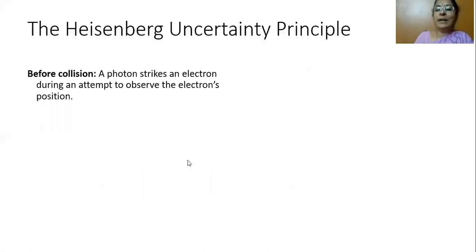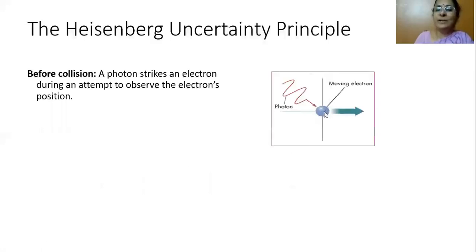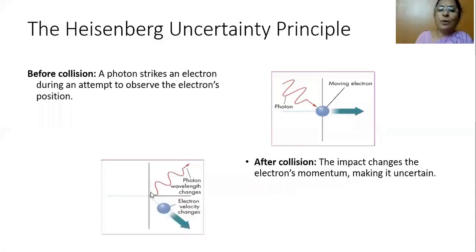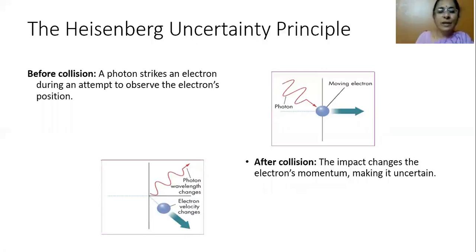To picture this situation: a photon is striking an electron that is initially at rest. Before the collision, the electron is at rest and the photon is approaching. After the collision, the photon gets scattered — it was moving in one direction, but due to the collision with the particle, it changes direction. The electron which was at rest then starts moving, making it very difficult to locate. So while measuring the location, we introduce uncertainty in the momentum of the particle.